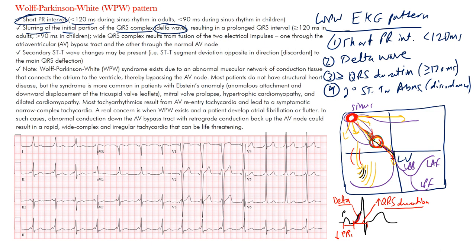Looking at this EKG example: you can see the P-waves here, and notice the short PR interval — it's less than 120 milliseconds, about 90 milliseconds. You can notice the slurring more in lead II — the slurring of the initial portion of the QRS complex. The P-wave is almost catching up to the QRS, confirming the short PR interval and delta wave. The terminal portion of the QRS is sharp, and the QRS duration was just about 120 milliseconds.